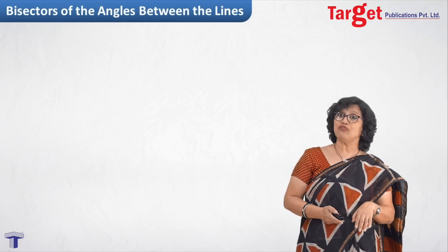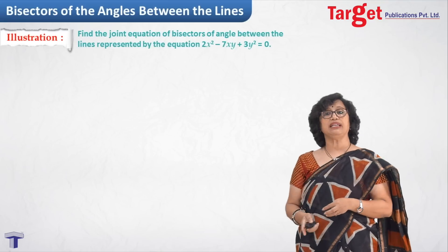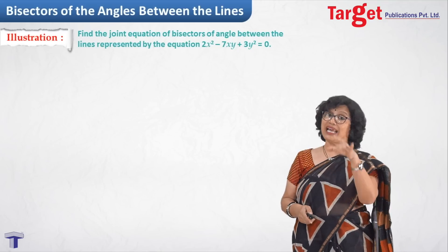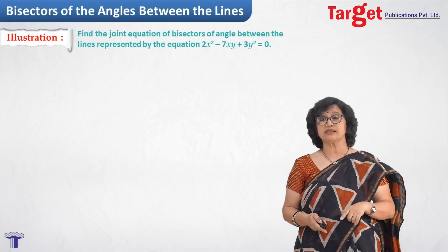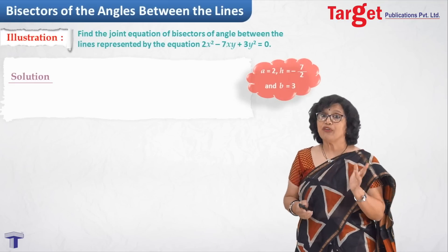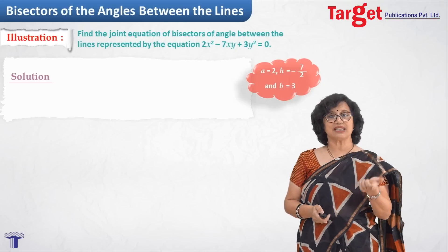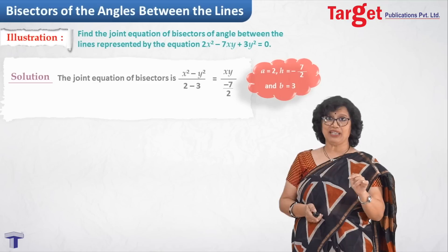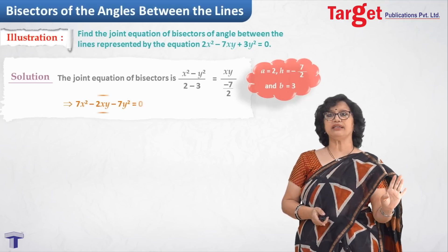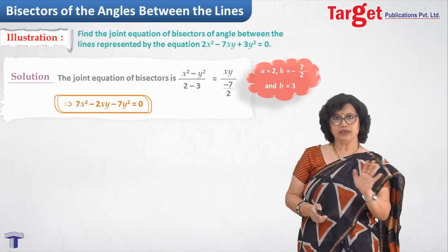Now the illustration: given 2x² - 7xy + 3y² = 0 as the joint equation of the lines, find the joint equation of the bisectors. Apply the formula (x² - y²)/(a-b) = xy/h with a = 2, b = 3, h = -7/2. Substituting: (x² - y²)/(2-3) = xy/(-7/2). Simplifying this gives the joint equation of the bisectors as 7x² - 2xy - 7y² = 0.